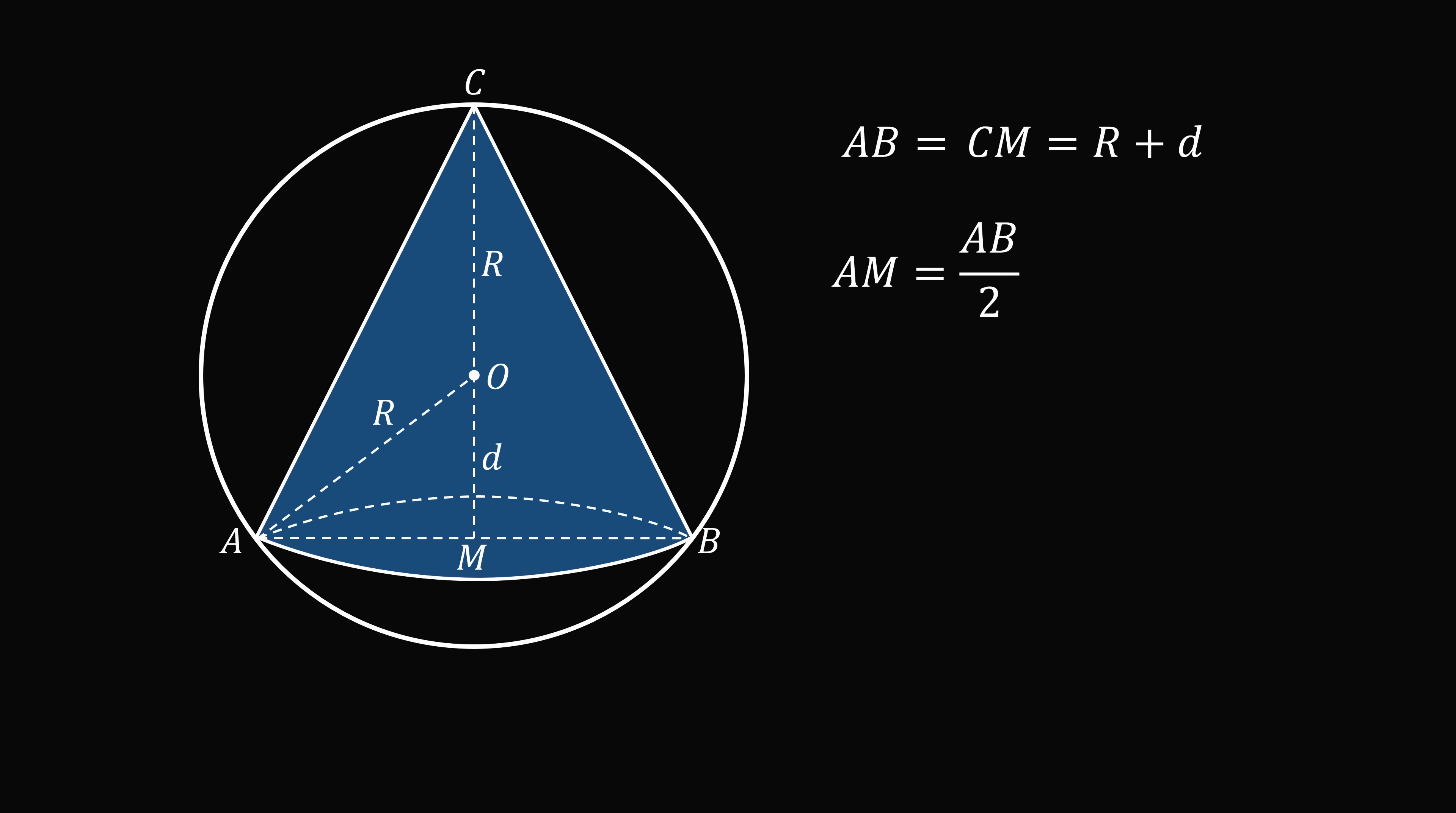So AM is equal to half of AB, and that is equal to R plus d all over 2. So AM equals MB equals R plus d all over 2. Let's now focus on triangle AMO. Since it's a right triangle, AM squared plus OM squared is equal to AO squared.